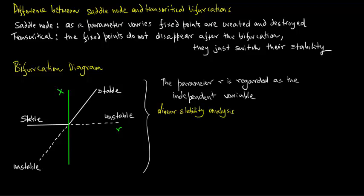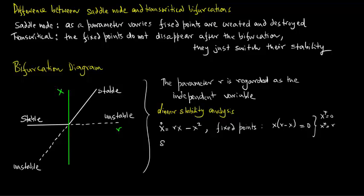Now let's do a quick linear stability analysis. We have x̊ = rx - x², and the fixed points are found from x(r - x) = 0, giving x* = 0 and x* = r. To determine stability, f(x) = rx - x², so f'(x) = r - 2x.